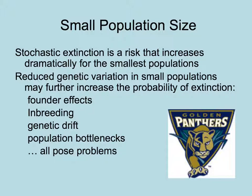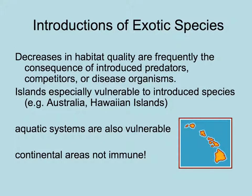All of these things pose problems for healthy populations persisting. Sometimes habitat quality for native species is diminished by introduced predators, competitors, and diseases. Island habitats are especially vulnerable to introduced species, and we've seen lots of cases of extinction in Hawaii and Australia. Aquatic systems are also vulnerable, and continental areas are not immune to the negative effects of exotic species.